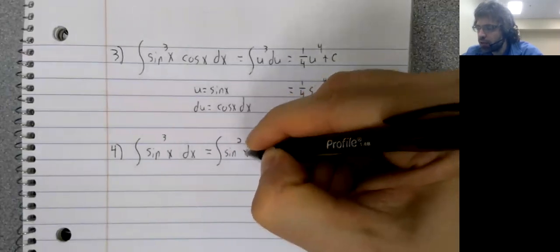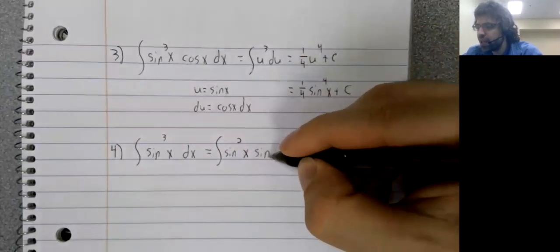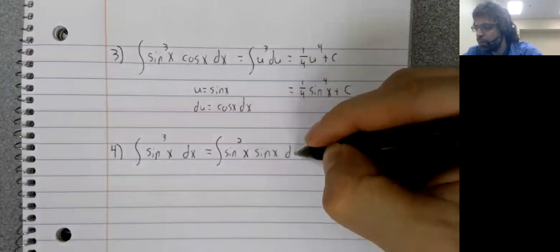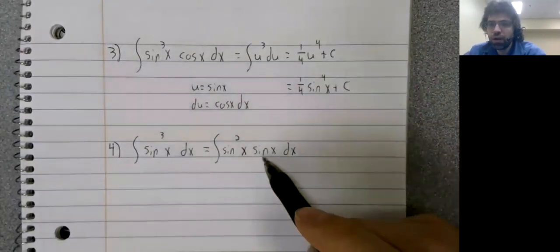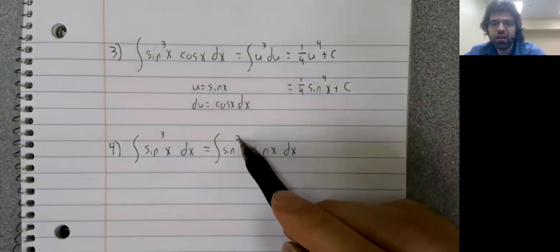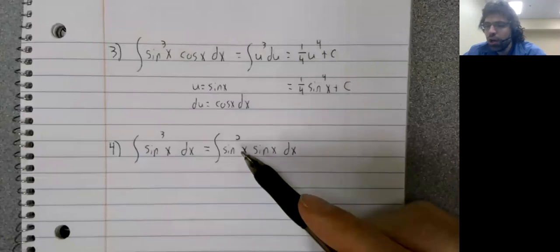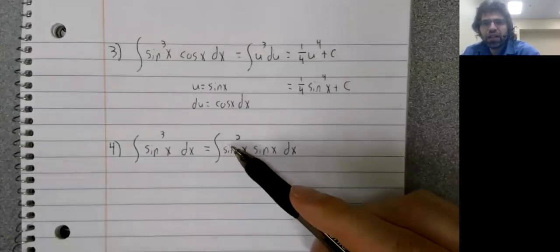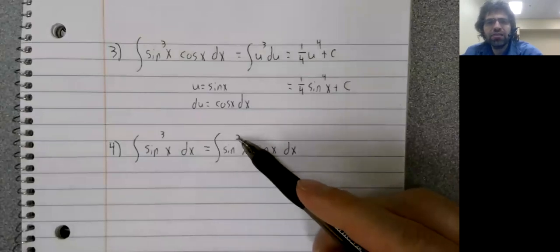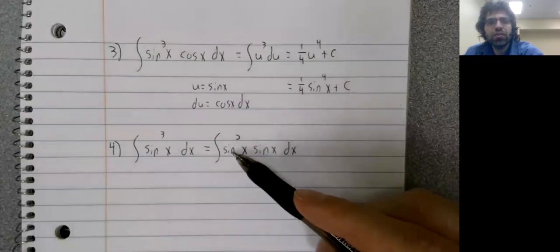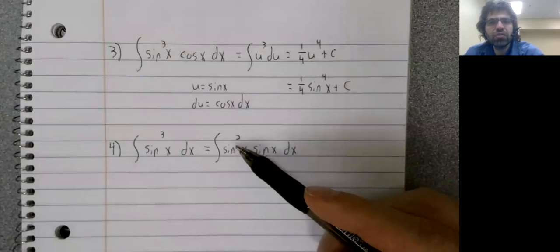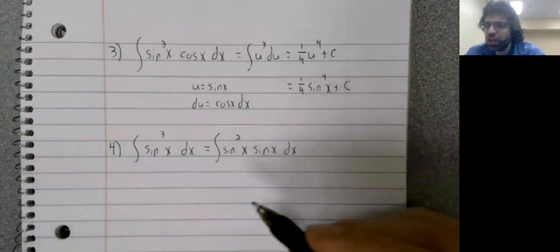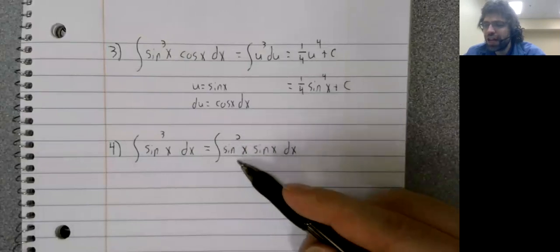We'll remind ourselves what the trick is. We take our odd power. We pull one of the trig functions out. That leaves us with an even power. We then rewrite the even power as a square. Like if we had a six here, that would be the sine squared raised to the third. If we had an eighth power, that would be the sine squared raised to the fourth.